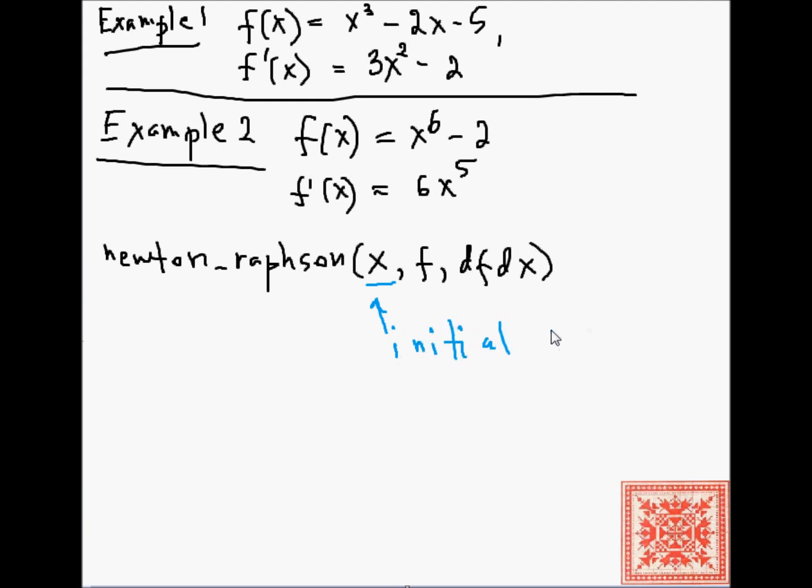So this is the initial guess. This is the original function. In the first example, it's this function, x cubed minus 2x minus 5. In the second example, it's x to the 6th minus 2. And this is its derivative.